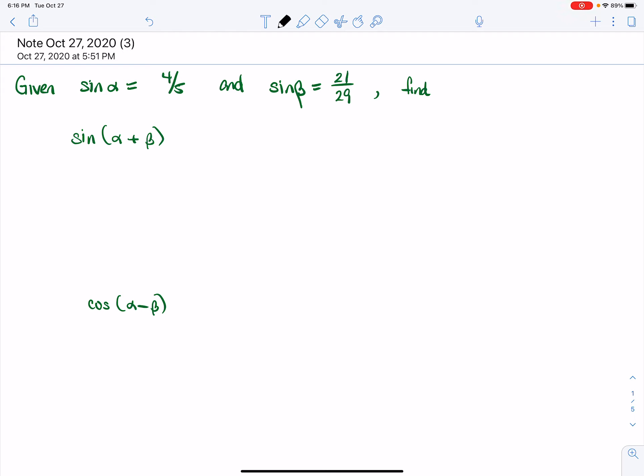So the first thing I like to do whenever I'm asked to do this kind of problem is first remember what the identity for sine of alpha plus beta is. How can I use this given information to answer this question? And we know that sine of alpha plus beta is the sine of the first angle times the cosine of the second angle plus the sine of the second angle times the cosine of the first angle.